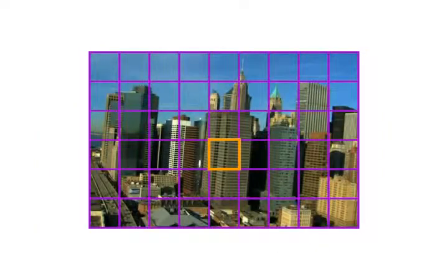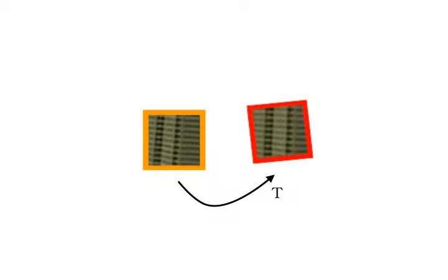To preserve temporal coherence, we compute the local transformations between subsequent frames based on the optical flow. We then strive to preserve the transformation between corresponding regions when retargeting, transforming each quad consistently.